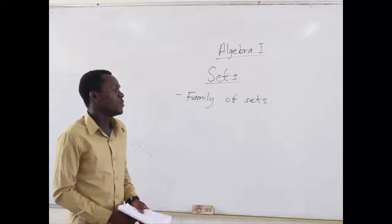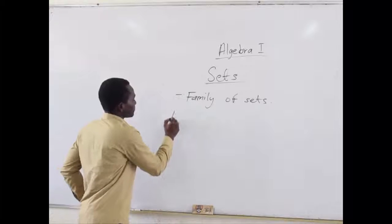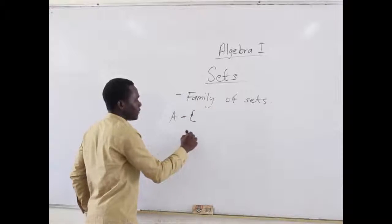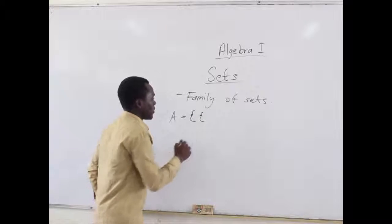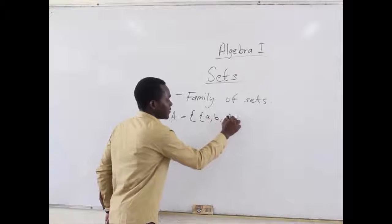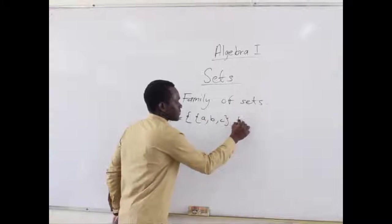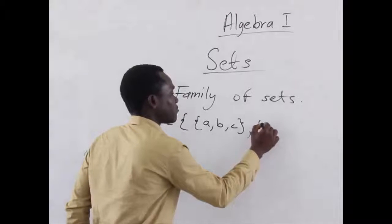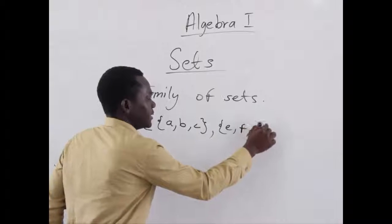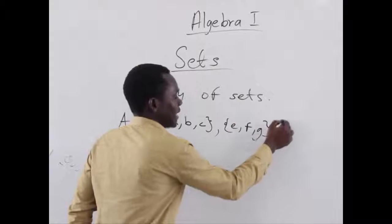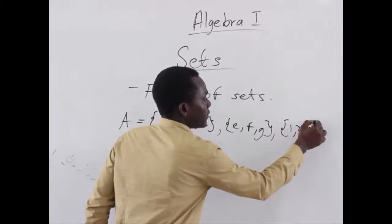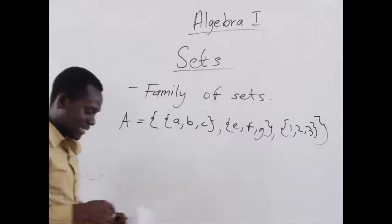a family of sets may be represented as, let's say, set A, having the elements of various sets. Let's say, set A, B, and C. Another set, let's say, E, F, and G. With another set, let's say, 1, 2, and 3.